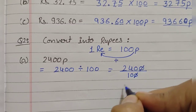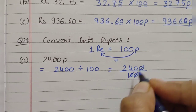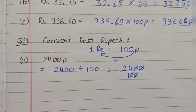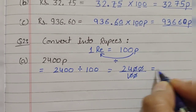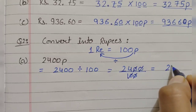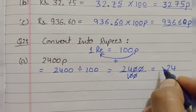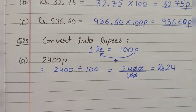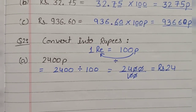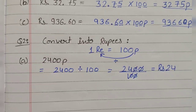Cancel one zero from the top with one from the bottom, and then cancel another zero. So your answer is 24, and this 24 is in rupees — that is 24 rupees.